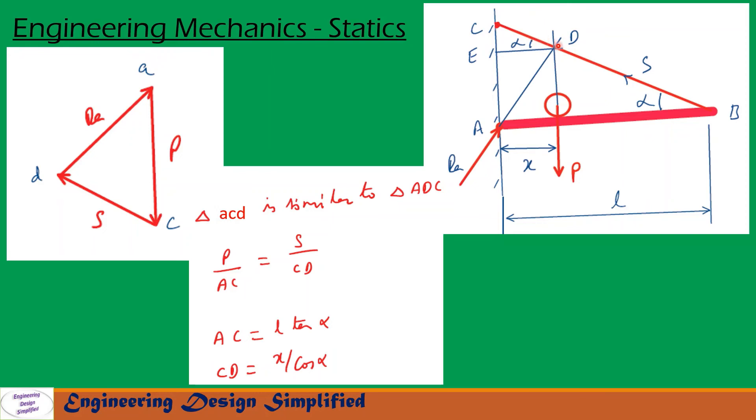CD can be written as: this distance is X, so from here to here E to D is X and this angle is alpha since this angle is also alpha. So from this little triangle we can write CD equal to X by cos alpha, that is written here.